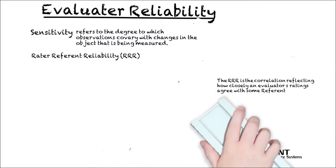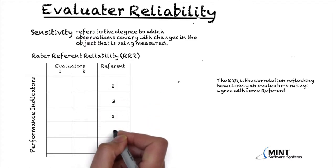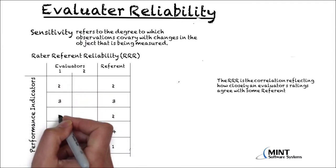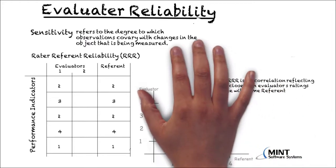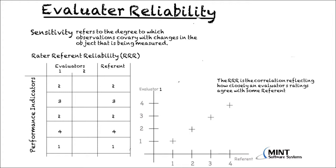Let's make this more concrete with a table. We have five grades or performance indicators of two evaluators and the referent. The referent grades can be considered as the true objective grades. Evaluator 1 gives the same grades as the referent. In the scatter plot, for each of the five performance indicators, both grade the same values — 2, 3, 2, 4, and 1 respectively. We have perfect agreement, and all points fall on the best-fitting straight line. In this case, the rater-referent reliability correlation reaches the maximum value of 1.